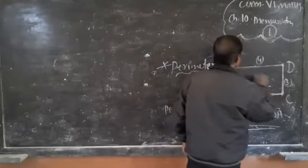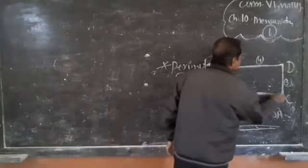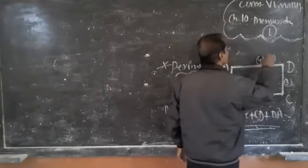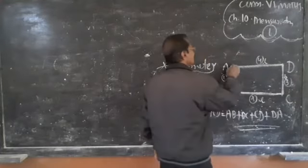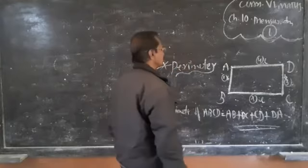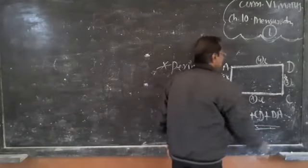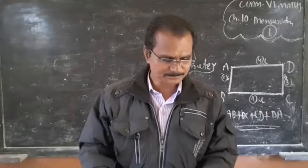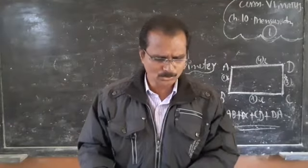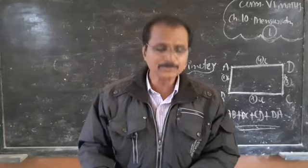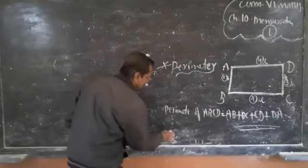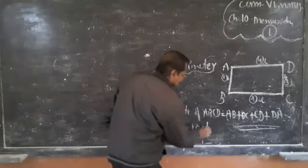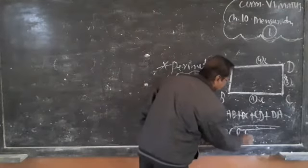But in the particular case of a rectangle, these two sides are the same — both equal to L. Both sides are equal: AD and BC are equal, and AB and CD are equal. So a rectangle has a special formula: the perimeter is equal to 2 into (L plus B). Perimeter of a rectangle equals 2(L + B).